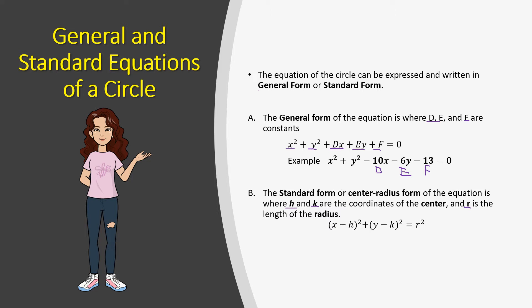The standard form is written as: x minus h squared plus y minus k squared equals to r squared. Here's an example: x minus 5 squared plus y minus 3 squared equals to 49. So h is 5 and k is 3.